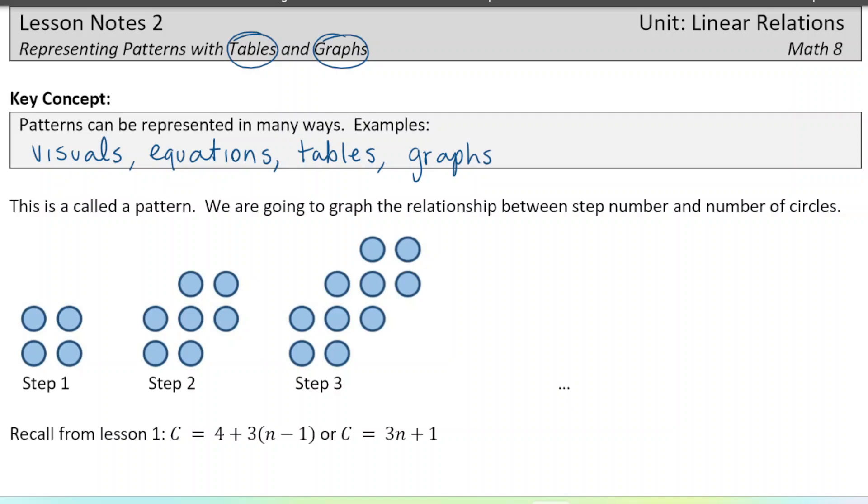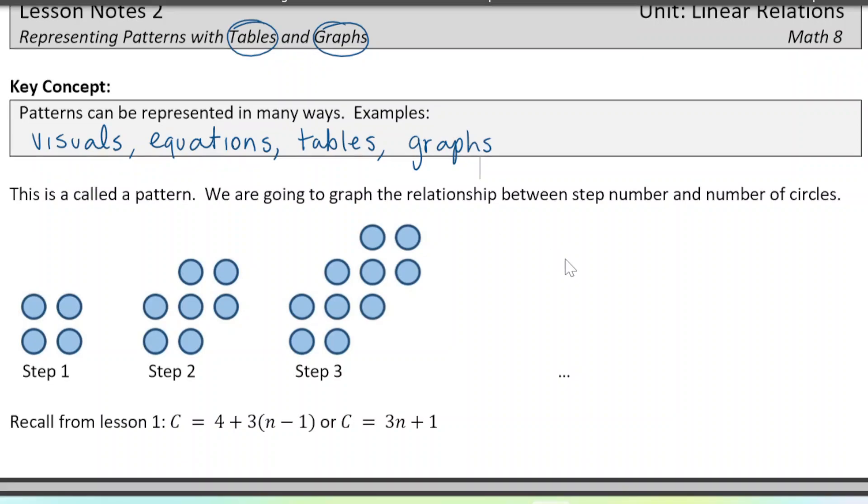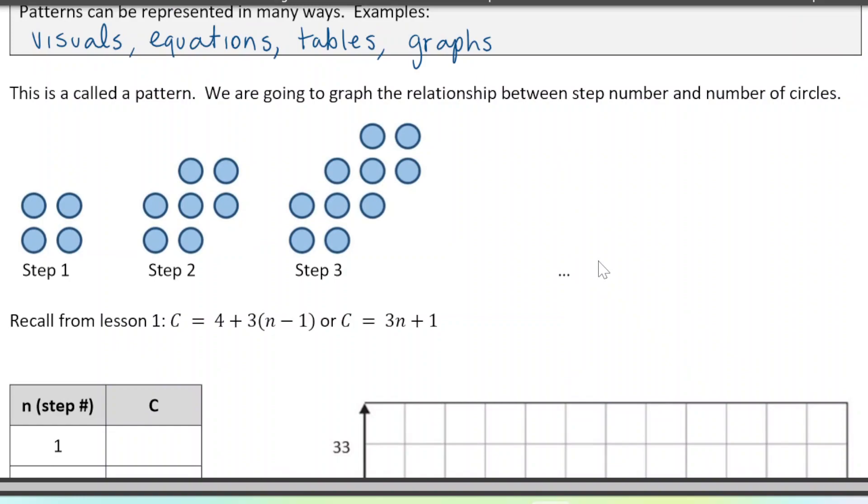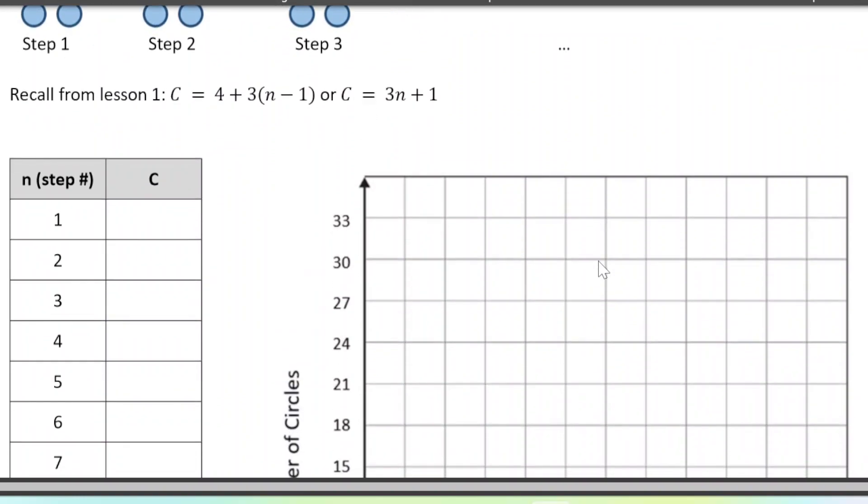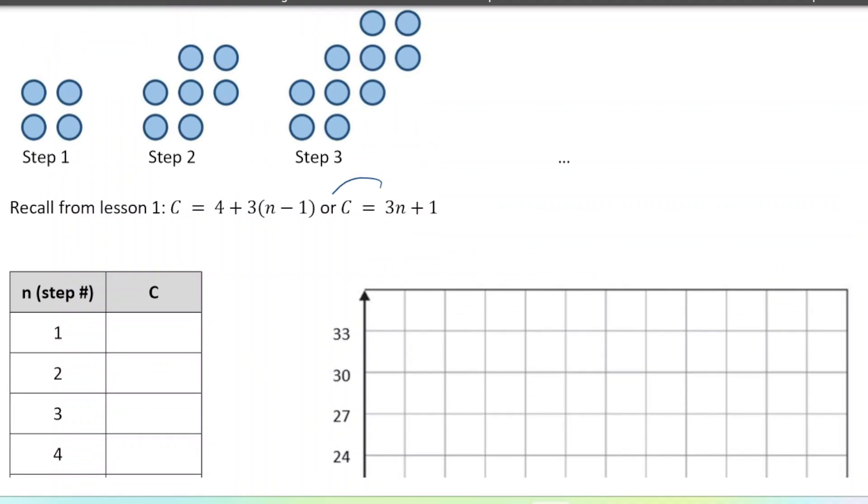We're going to look at the same three patterns we did in lesson one. So if you haven't seen lesson one, you should go back and watch that first. So the first pattern we looked at looks like this, and we came up with an equation to represent that pattern. But let's just make a table.